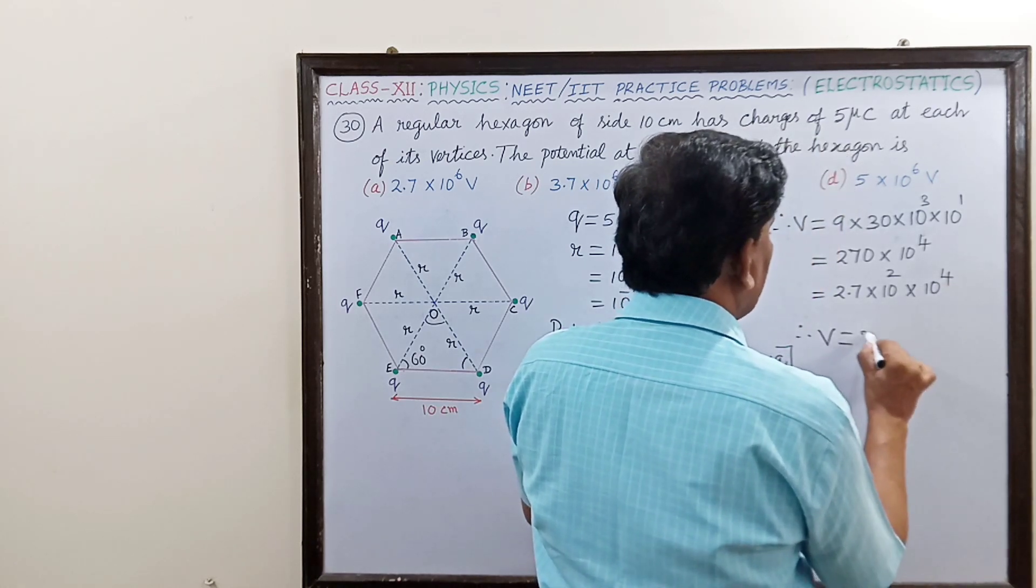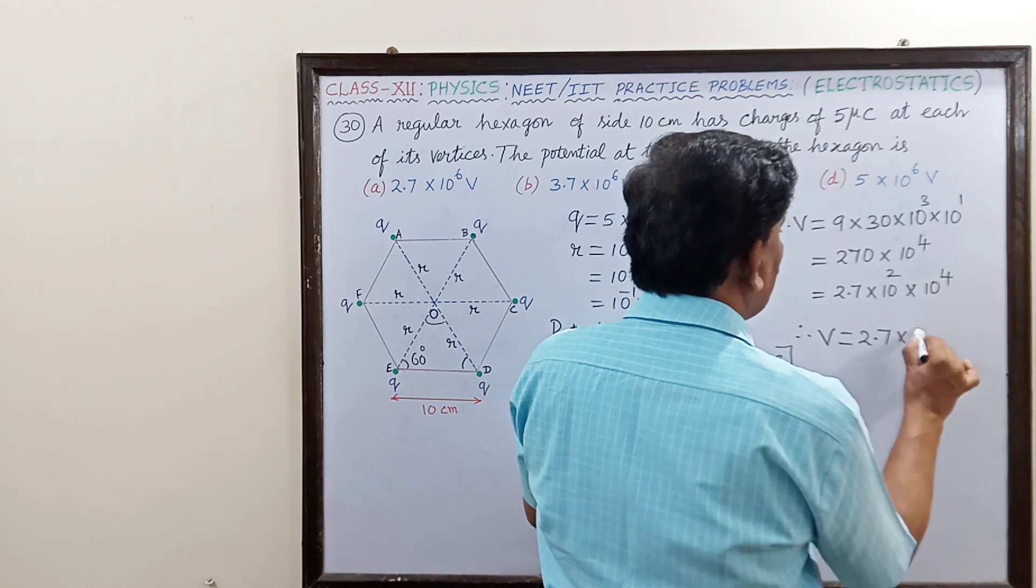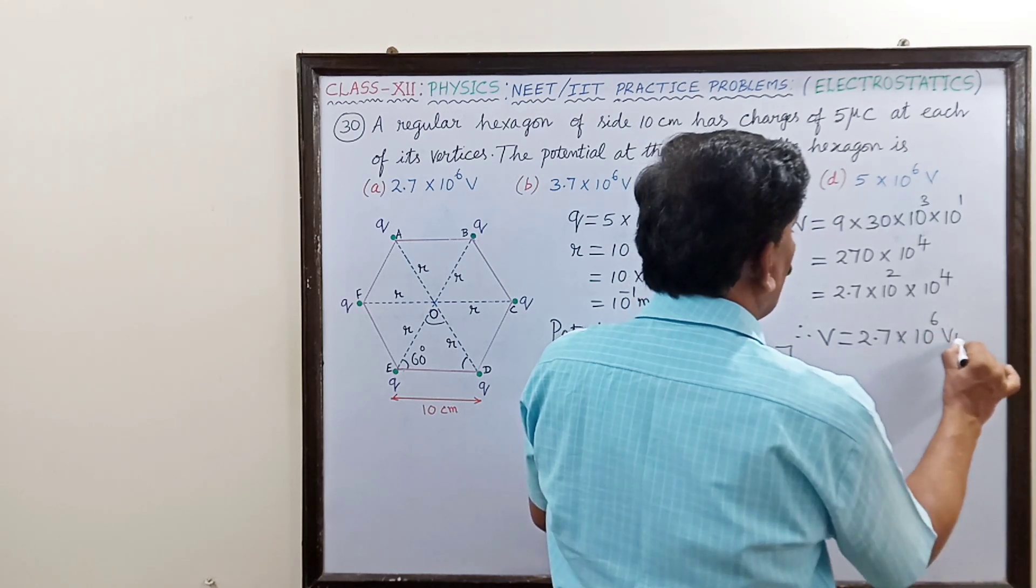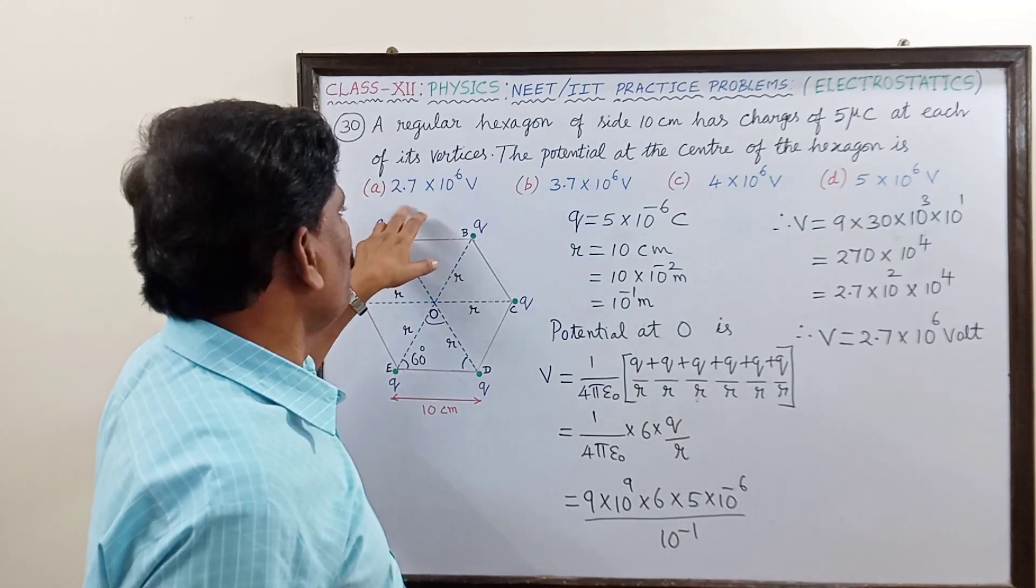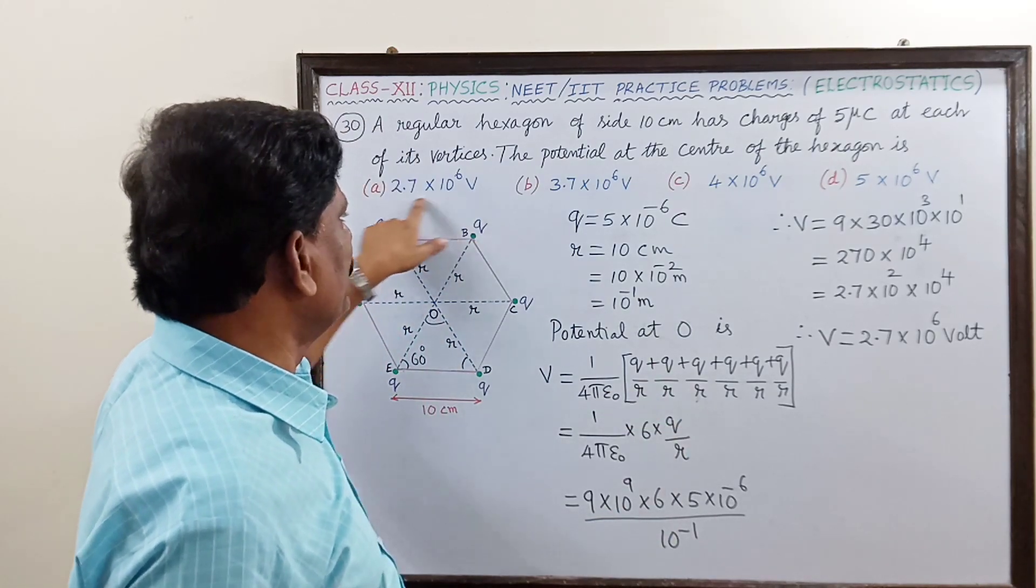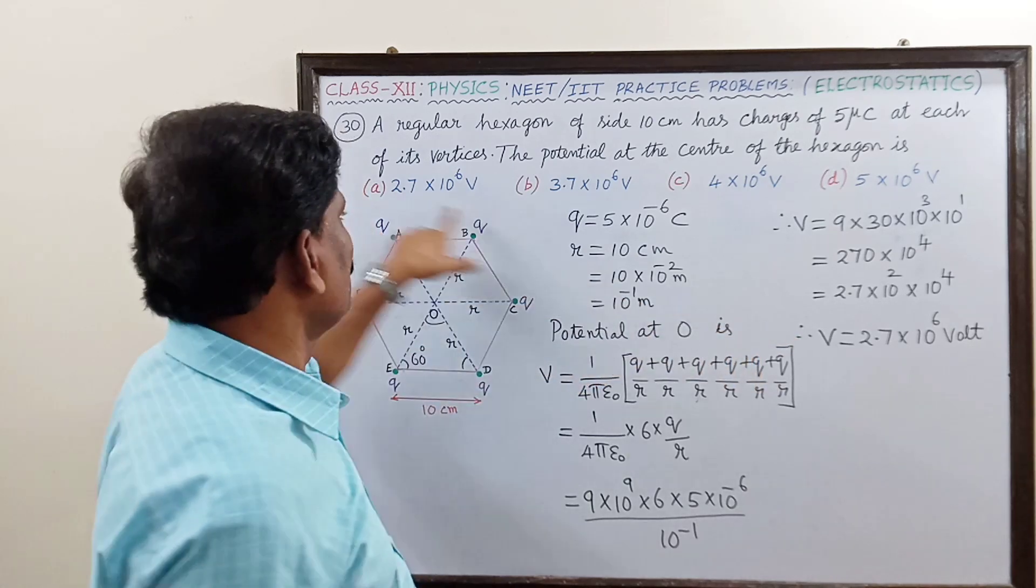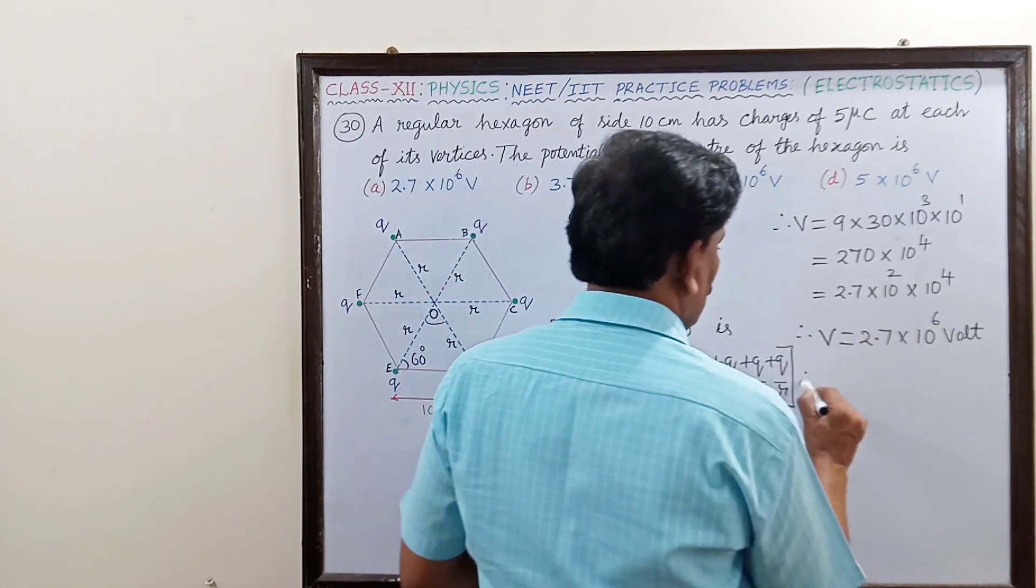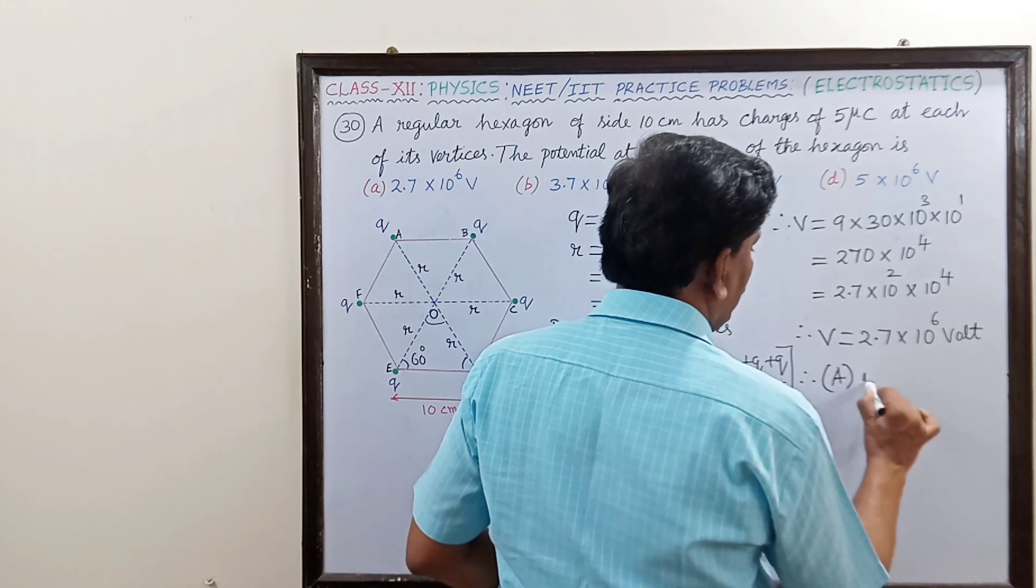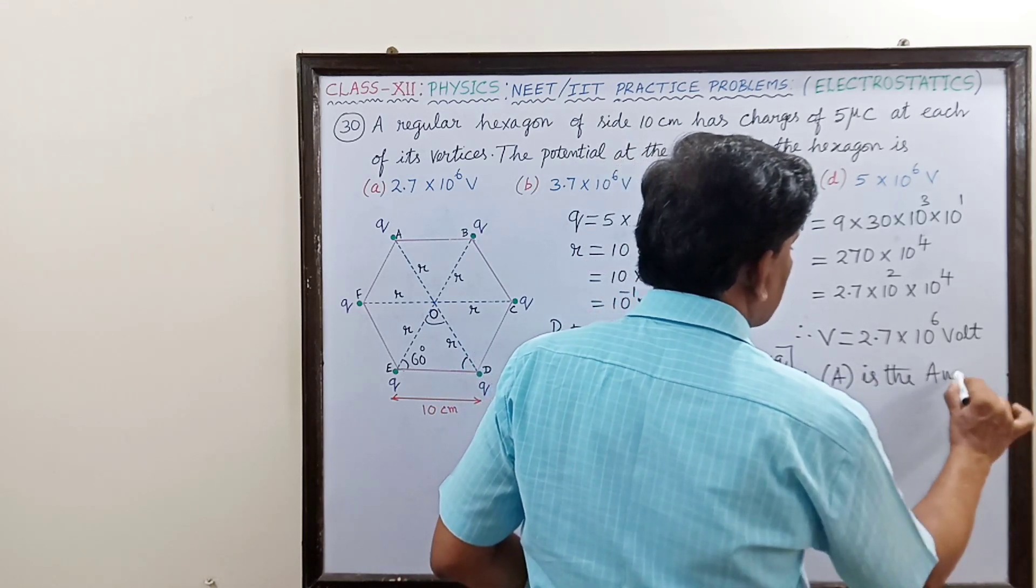Therefore the answer must be V equal to 2.7 into 10 power of 6 volt. So this is the final answer. Option A itself is the correct answer. 2.7 into 10 power of 6 volt. Therefore option A is the correct answer.